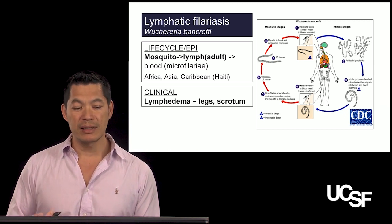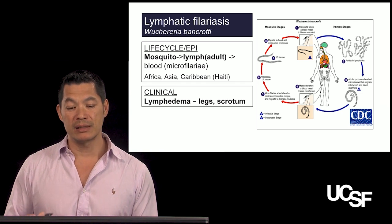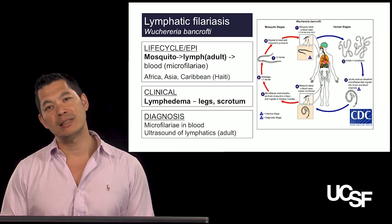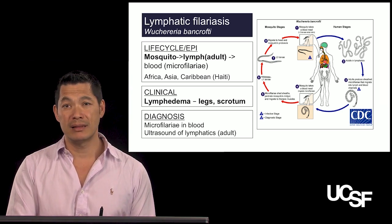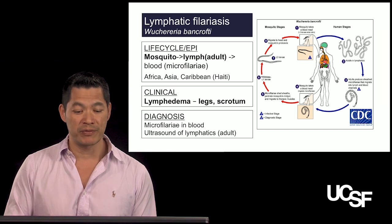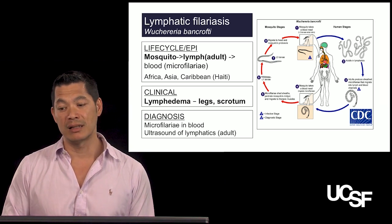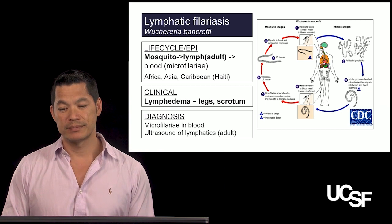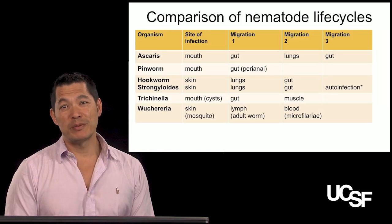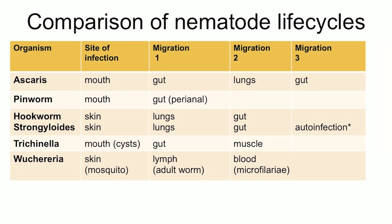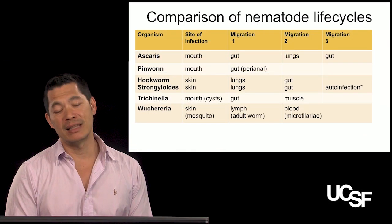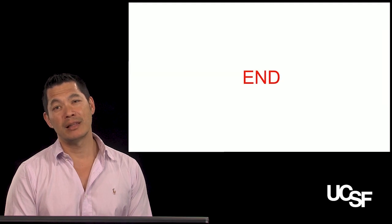Clinically, you see lymphedema particularly in the legs and scrotum. You diagnose it when you see the microfilariae stage in the bloodstream — you can get a thin smear to find microfilariae, or ultrasound the lymphatics to find the adult forms. To summarize, we've talked about a lot of roundworms in this section. Many of them love the lungs — hookworm, strongyloides, and ascaris — and then some other parasites as well. Thank you very much for your attention.